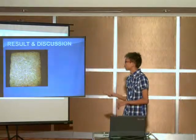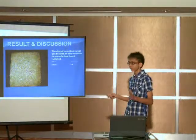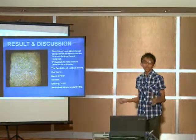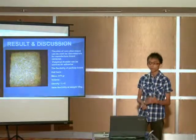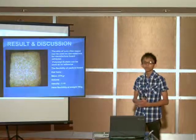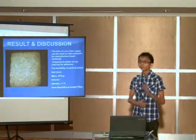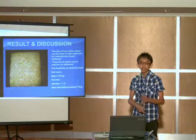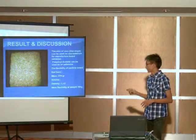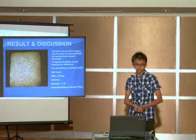The result is, this is the picture review of particle wood that I have made from the corn skin. The corn skin can be used as a raw material for the manufacture of particle wood, and we can use polyvinyl acetate as an adhesive. The flexibility of the particle wood was identified at a width load of 10 kilograms.